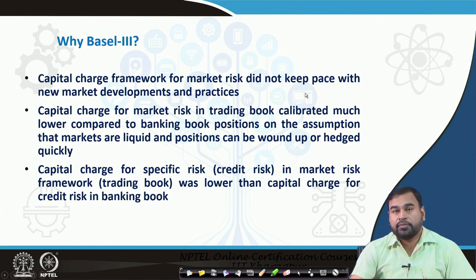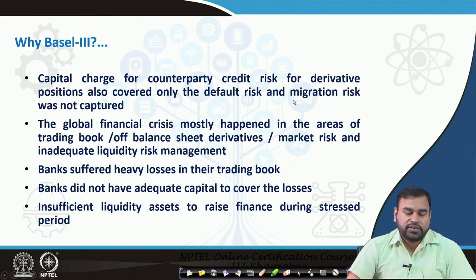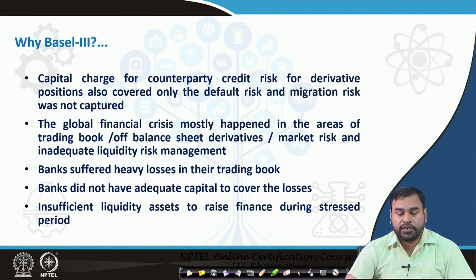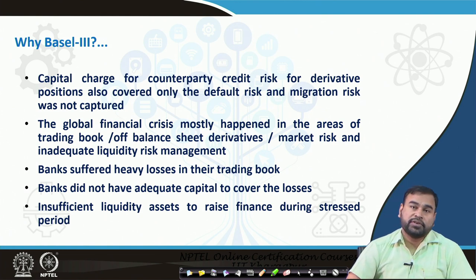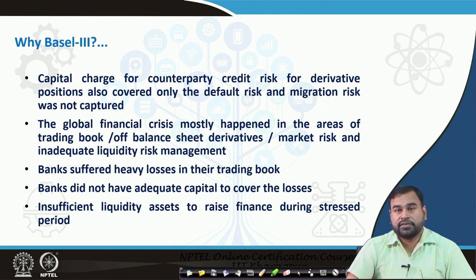Because of that, they were trying to expand Basel 2 norms so that those dynamics could be captured. The capital charge for counterparty credit risk for derivative positions also covered only the default risk, and migration risk was not captured in Basel 2. The global financial crisis of 2008 happened mostly in the areas of trading books and related derivatives, which were not explained through Basel 2 norms.